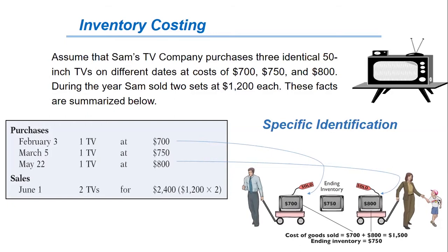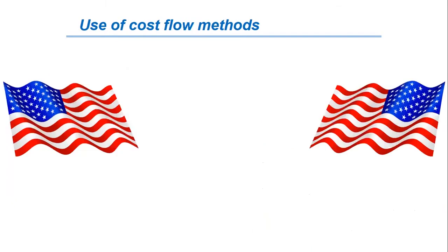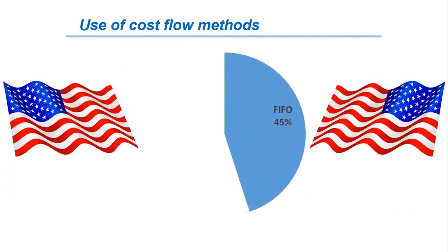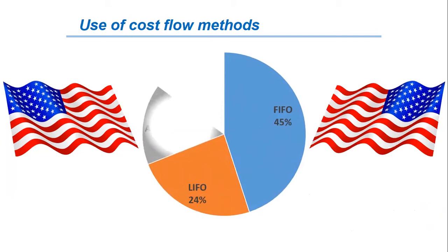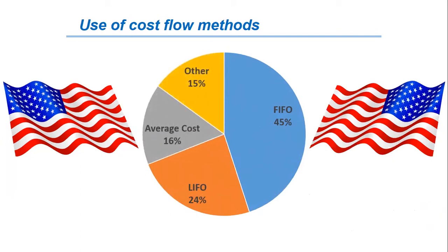This is why we have cost flow assumptions. In this chart, you can see the use of cost flow methods in major U.S. companies. The most popular is the FIFO method, followed by the LIFO method and average cost.